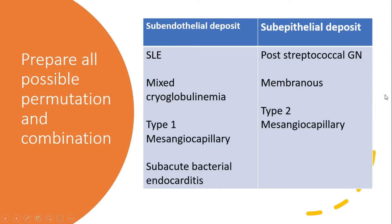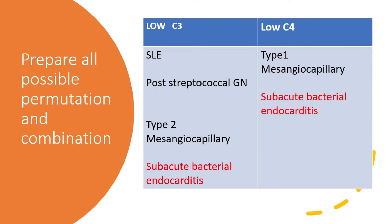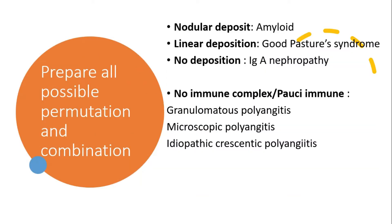Be thorough with your preparation. In your own set of notes, prepare all possible permutation combinations. I have given another example of the types of deposits that often feature in questions depending on their locations. Another set of commonly asked questions are based on complement levels. Also prepare the type of deposition — where you see linear deposition and where you see no deposition. You can also expect questions on no immune complex, also known as pauci-immune glomerulonephritis.